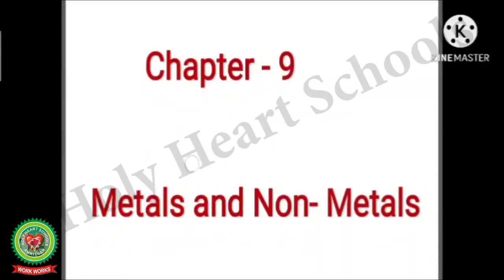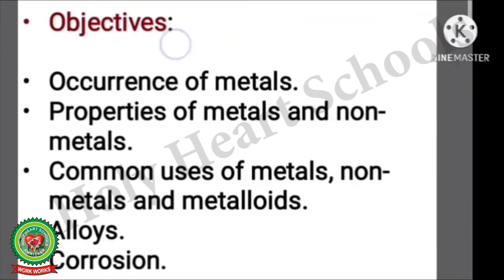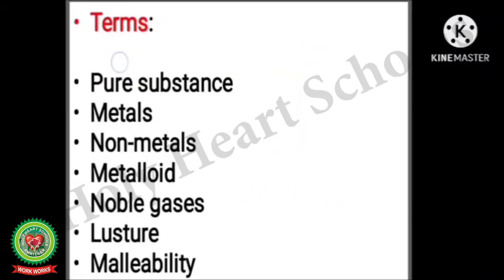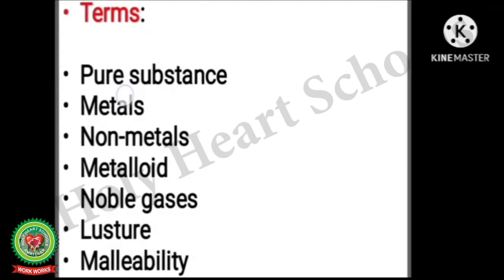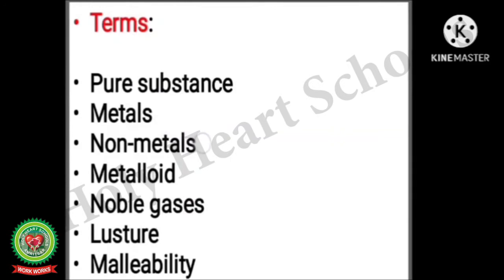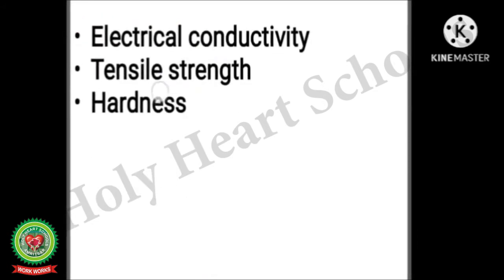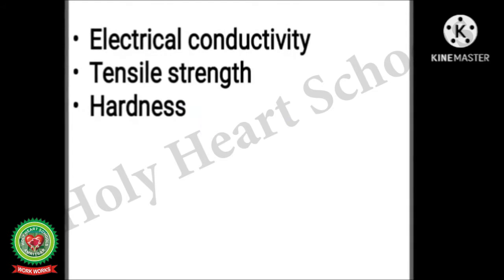Hello students, today we will discuss Chapter 9: Metals and Non-metals. The objectives of the chapter are occurrence of metals, properties of metals and non-metals, common uses of metals, non-metals and metalloids, alloys and corrosion. The specific objectives of today's class are occurrence of metals and properties of metals and non-metals. The terms we will learn today are pure substance, metals, non-metals, metalloid, noble gases, luster, malleability, electrical conductivity, tensile strength, and hardness.